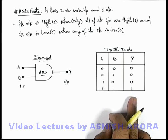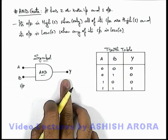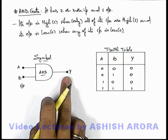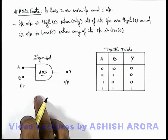So this is the truth table according to which any waveform analysis which are applied at A and B, we can deduce the waveform available at the output terminal, which we will see in the next section.